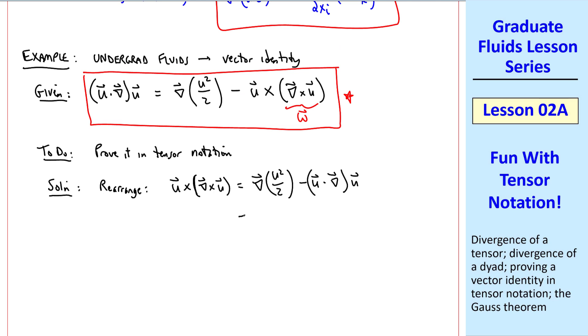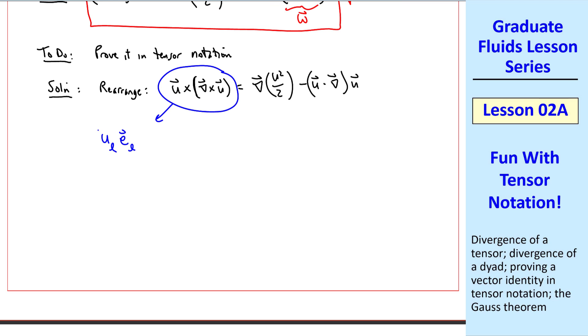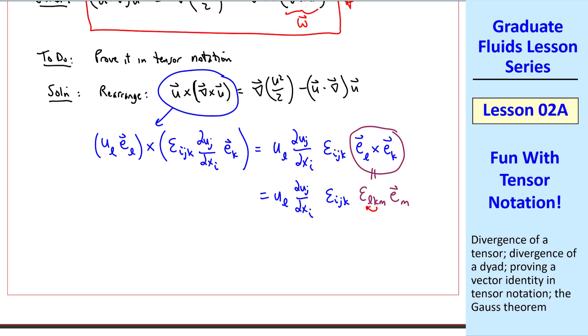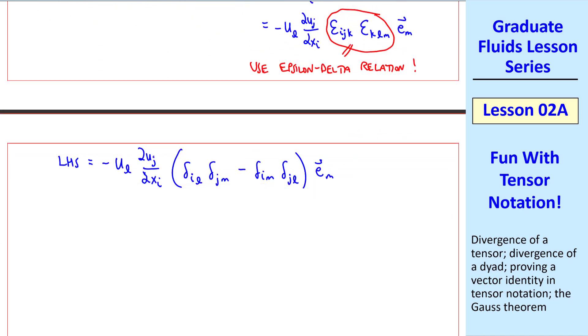First, let's rearrange and start writing this out in formal tensor notation. The left-hand side becomes u l e l crossed with epsilon ij k del u j del xi e k, where this term is the vorticity vector written in tensor notation. Since I used i, j, and k here, I used l here. I rearrange as u l del u j del xi epsilon ij k e l cross e k. Again, keeping in mind that operators like a cross product affect only these unit vectors, not these components in tensor notation. So I put those outside the cross product. Well, this term is epsilon l k m e m, which is how we express a cross product in tensor notation from a previous lesson. Now I'm going to shift the k over by one place. And remember, that gives us a negative sign. So I rewrite it this way. The reason I did that was because this is now in the form where we can use the epsilon delta relation.